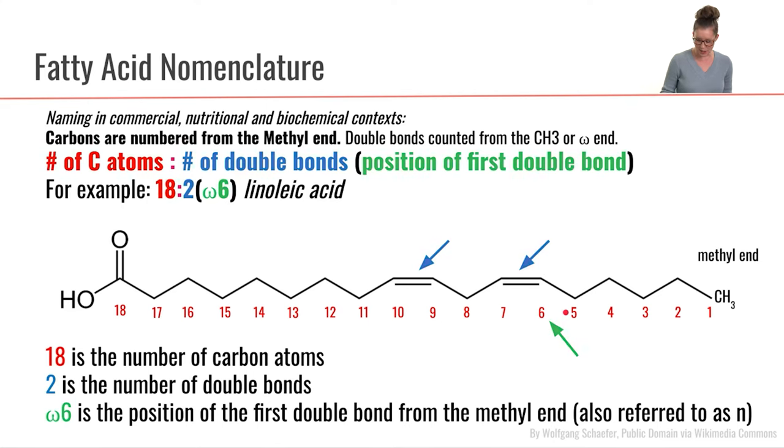In this case, our first double bond is at carbon number six, so we would call this an omega-6 fatty acid. Putting all of that together, this fatty acid would be named as 18-2-omega-6. That turns out to be linoleic acid, one of our essential fatty acids. So that is how we name things mostly in the nutrition text.